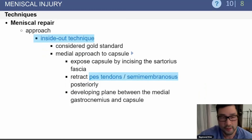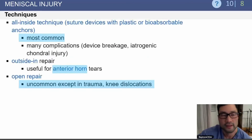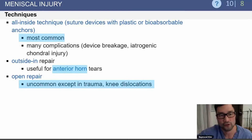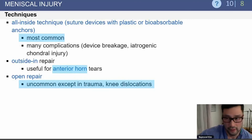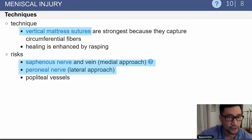Meniscal repairs can be performed using an inside-out technique, which is considered the gold standard. On the lateral side, you want to develop a plane between the IT band and the biceps tendon and then retract the lateral head of the gastroc posteriorly. There are all-inside techniques and devices that are very commonly used today, though complications include device breakage or iatrogenic chondral injury. Open repairs are more common in the trauma setting. Vertical mattress sutures are the strongest because they capture circumferential fibers. Risks of meniscus repair include injury to the saphenous nerve on the medial side and the peroneal nerve on the lateral side.